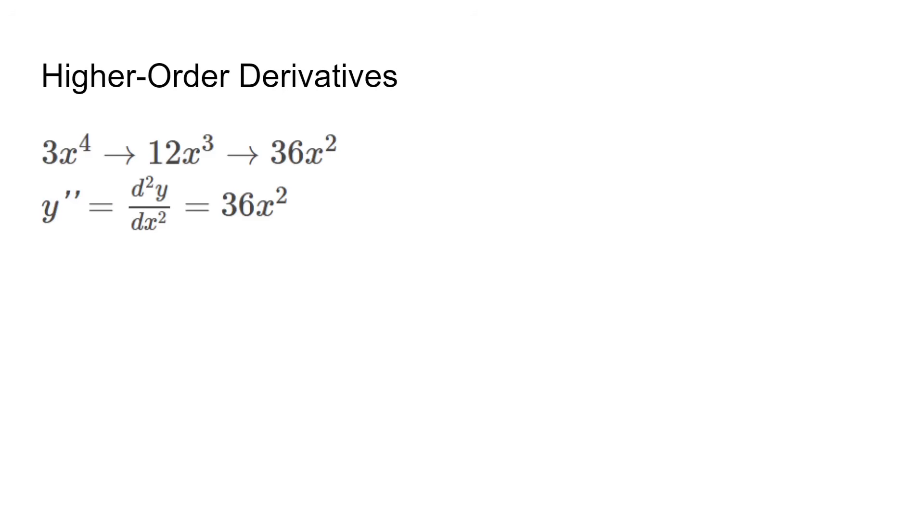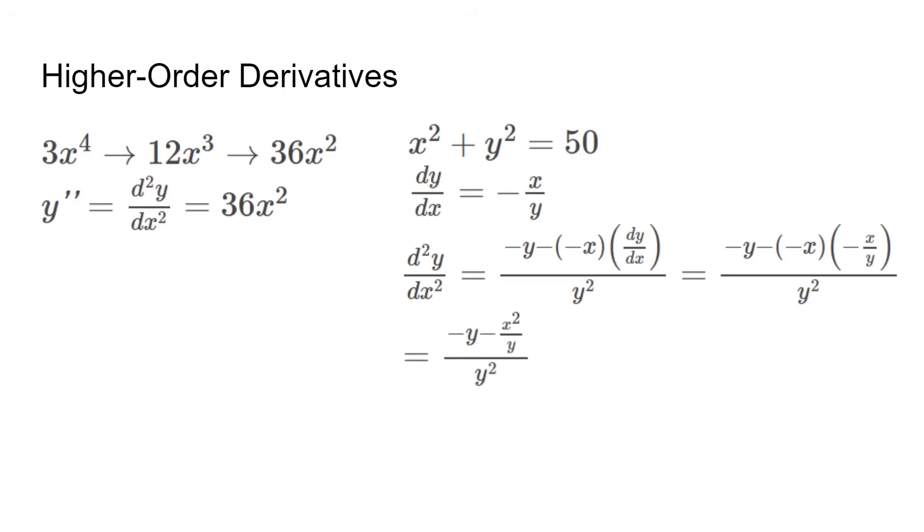However, it is a bit more complicated when we deal with implicit differentiation. Using the example of x squared plus y squared equals 50, we do a first order to get dy over dx equals negative x over y. To derive it again, we use the quotient rule to get negative y minus negative x times dy over dx, all over y squared. We plug in dy over dx from the first derivative to get negative y minus x squared over y, all over y squared. So a second derivative is just the same process, but you plug in the first derivative after. Depending on the question, you may have to further simplify it or plug in numbers to solve.